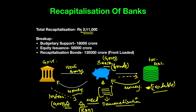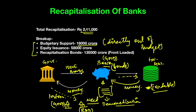Total recapitalization has been announced at Rs. 2.11 lakh crore. The breakup: budgetary support directly from the union government's budget is Rs. 18,000 crore; equity issuance — where the bank issues equity and the government buys into it — is Rs. 58,000 crore; and recapitalization bonds, which I have just explained, will be up to Rs. 1,35,000 crore and this will be front-loaded, meaning it will be issued in the next few months.